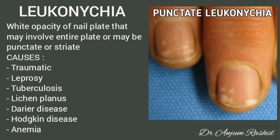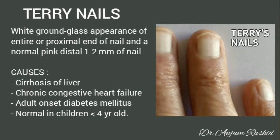Leukonychia: white opacity of the nail plate that may involve the entire plate or may be punctate or striate. Causes include traumatic episodes, leprosy, tuberculosis, lichen planus, Darier disease, Hodgkin disease, or anemia.